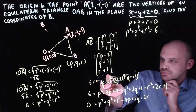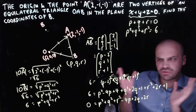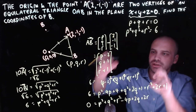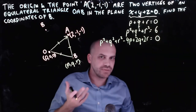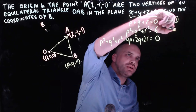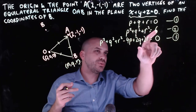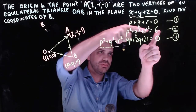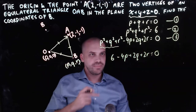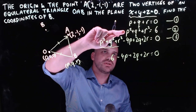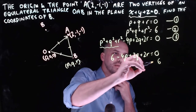I got rid of the square roots, expanded all the brackets, and grouped them: p² + q² + r² − 4p + 2q + 2r = 6. Let's call that equation three. So we now have three equations and three unknowns. Equation one: p + q + r = 0. Equation two: p² + q² + r² = 6. Equation three: p² + q² + r² − 4p + 2q + 2r = 6. I'll substitute equation two into equation three — replacing p² + q² + r² with 6 — giving: 6 − 4p + 2q + 2r = 0.